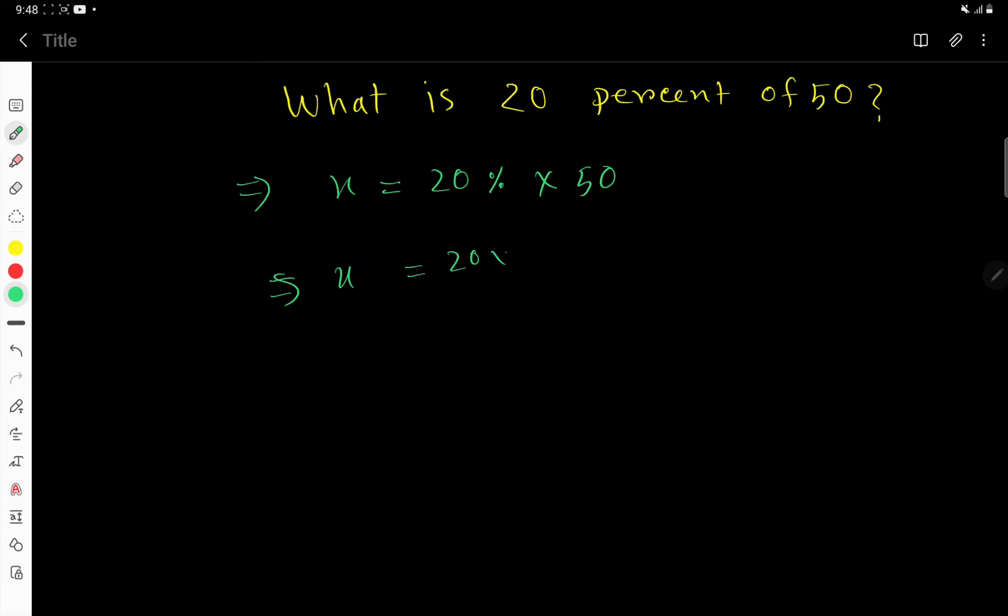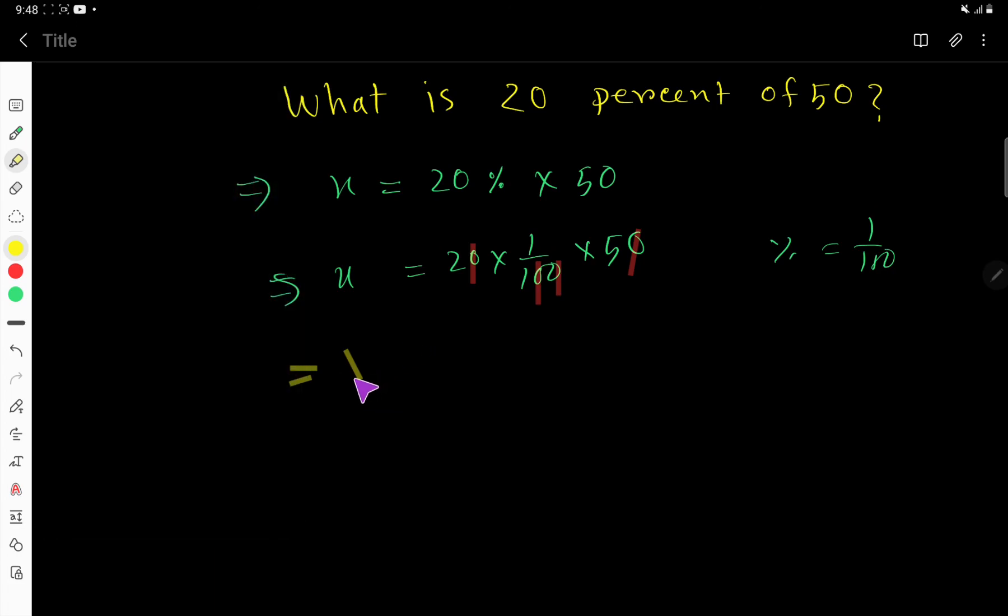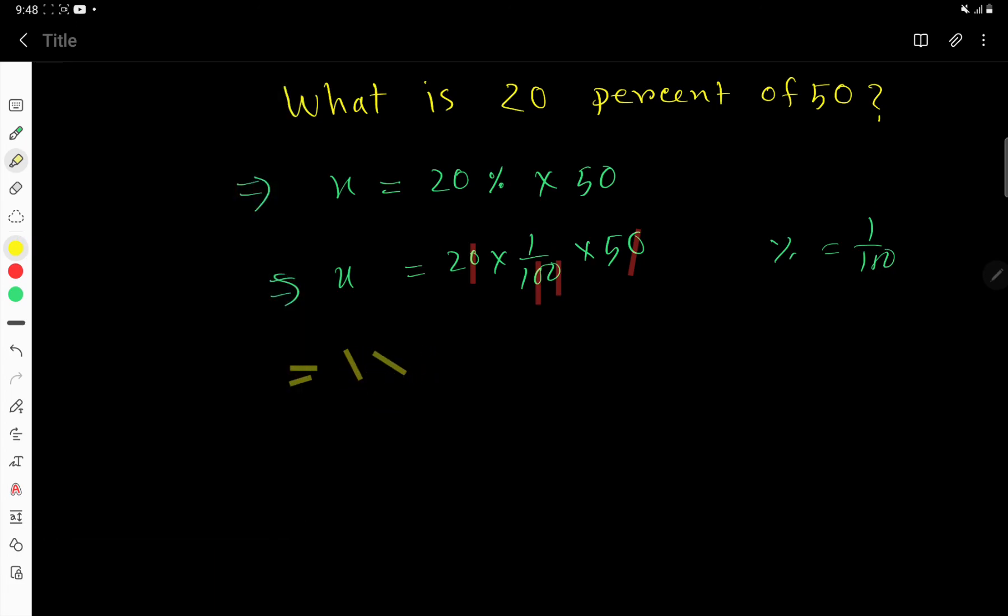20% means 1 over 100. Then 50. Now cancel this 0, this 0, then this 0, this 0. So you are getting x equal to 2 times 1 times 5.